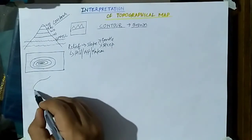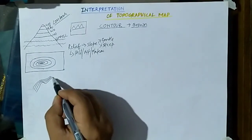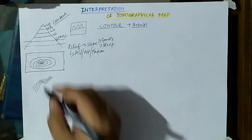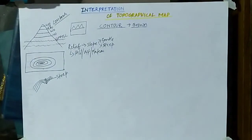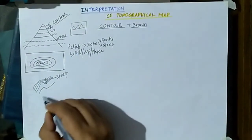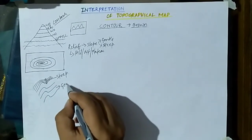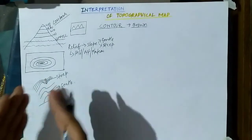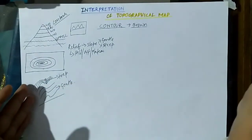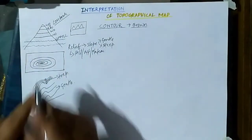If the contours are drawn very close to each other, that refers to a steep slope. If the contours are spaced apart from each other, that represents a gentle slope. This is the way relief features present on the ground are represented on a small piece of paper.